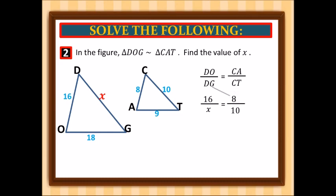Now we cross multiply. 16 times 10 is 160, and x times 8 is 8x. Divide everything by 8. So 160 over 8 gives us 20. Therefore, side DG is equal to 20.